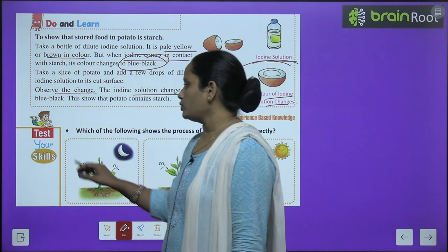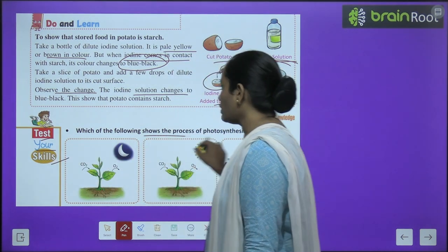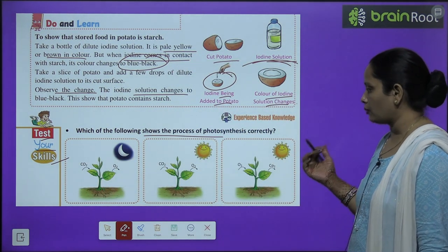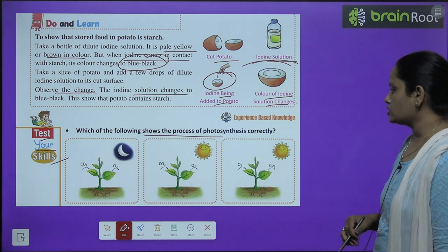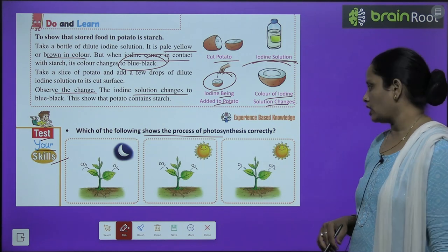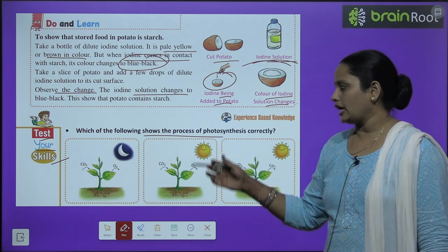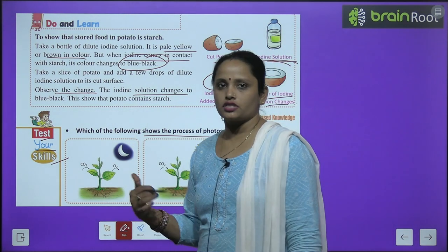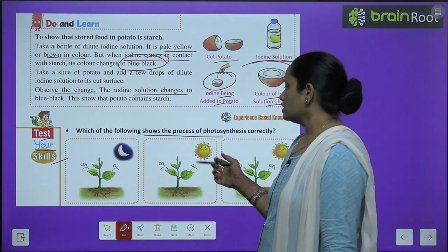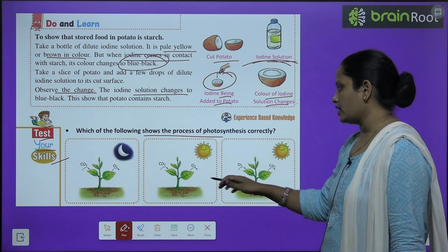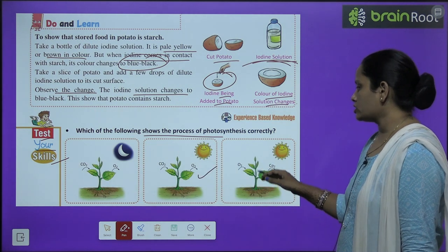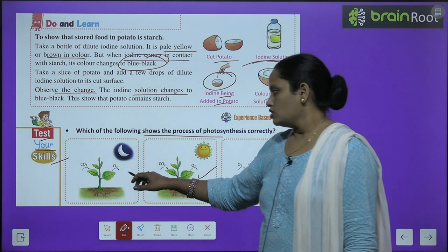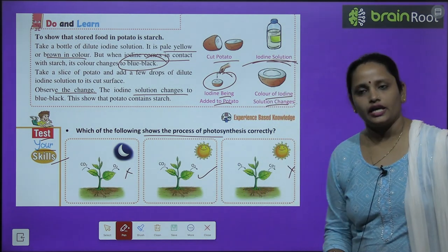Now let's move on to test your skills. Which of the following shows the process of photosynthesis correctly? Carbon dioxide should enter and oxygen should come out — that is the correct answer. The second picture is correct.